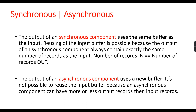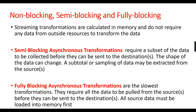Those are the two classifications of transformations: synchronous and asynchronous. Now, what is blocking and non-blocking? Once you understand synchronous and asynchronous, it's easy to classify blocking, non-blocking, and semi-blocking. Non-blocking transformations are like streaming transformations — the data flows through, is calculated in memory, and does not require any data from outside resources. These are synchronous transformations.